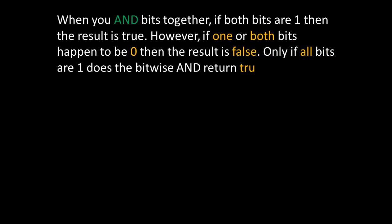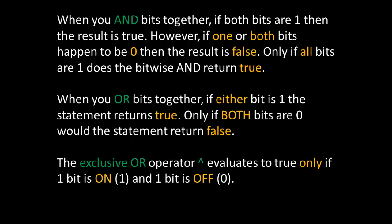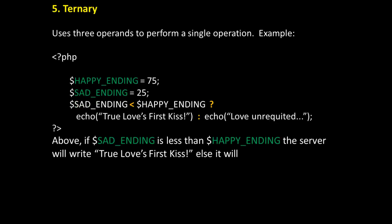When you AND bits together, if both bits are 1, then the result is true. However, if one or both bits happen to be 0, then the result is false. Only if all bits are 1 does the bitwise AND return true. When you OR bits together, if either bit is 1, the statement returns true. Only if both bits are 0 would the statement return false. And the exclusive OR operator, utilizing the caret, evaluates to true only if one bit is ON and one bit is OFF. That is, a 1 and a 0.